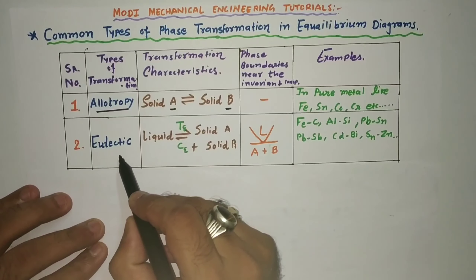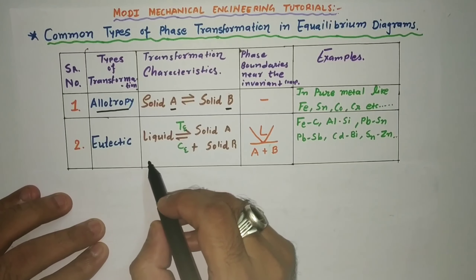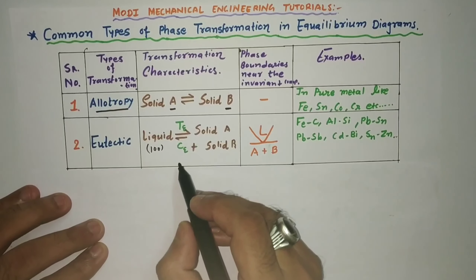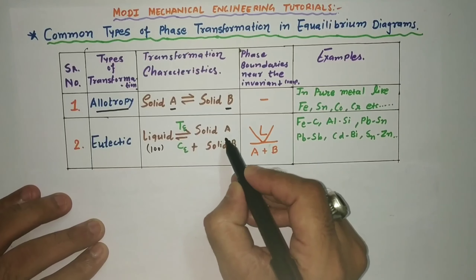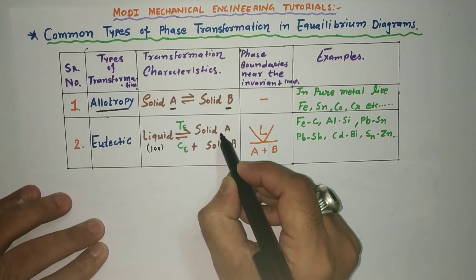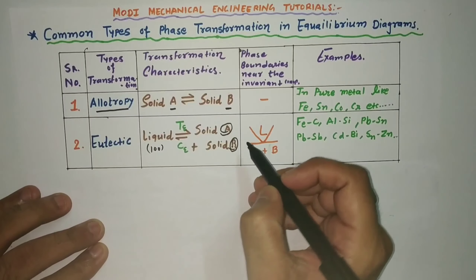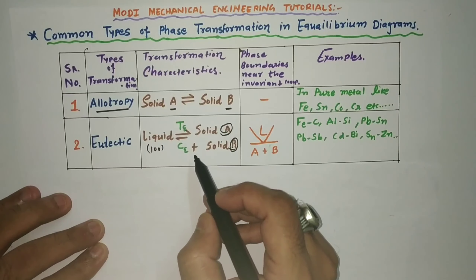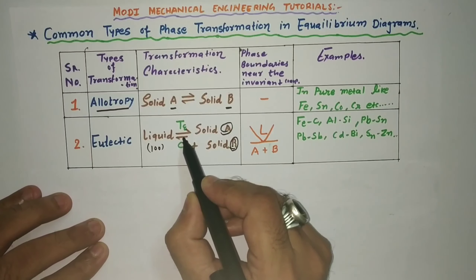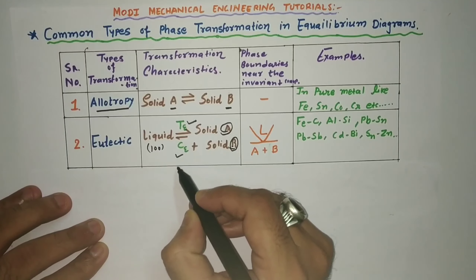The second type is eutectic transformation. Eutectic transformation means a 100% liquid phase transforms into two different solids — solid A and solid B. This occurs at what is known as the eutectic point, which is the intersection of the eutectic temperature line and the eutectic composition line.